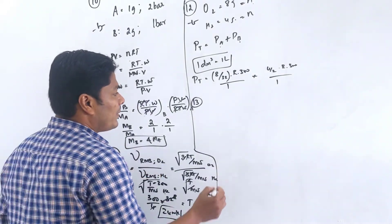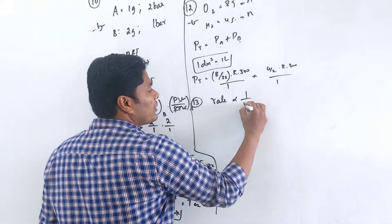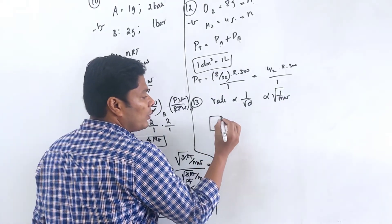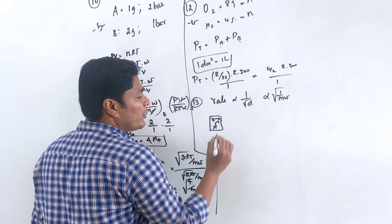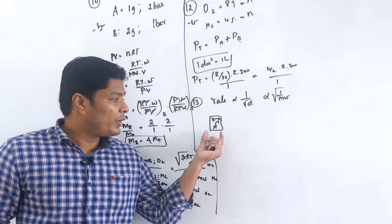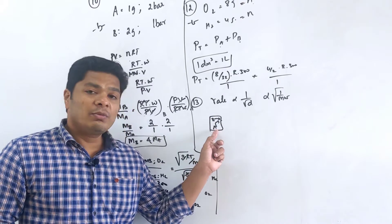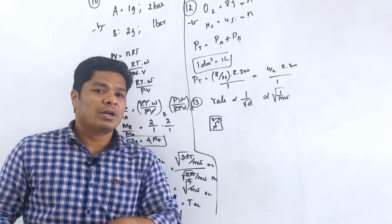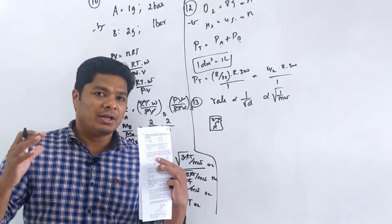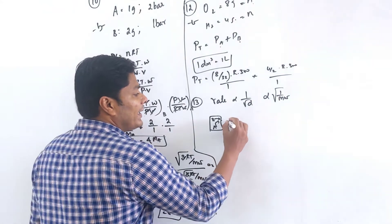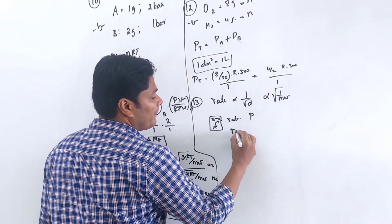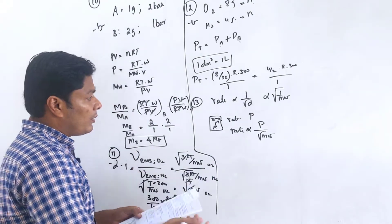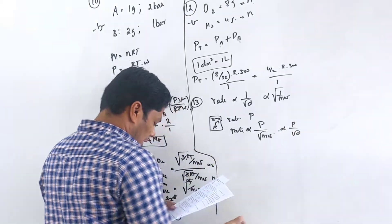Question 13: Rate of effusion of a gas is proportional to pressure divided by square root of molecular mass (or density). Rate ∝ P/√M, which is equivalent to ∝ P/√(density). Option A.